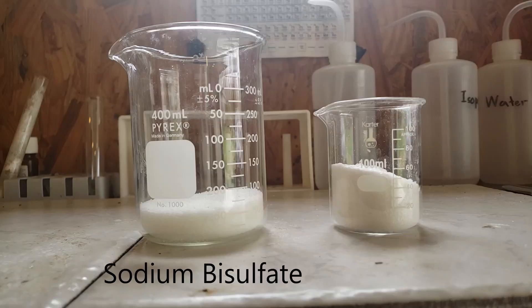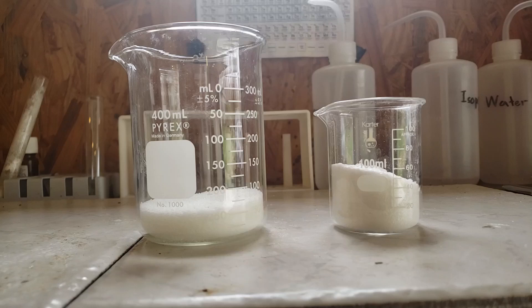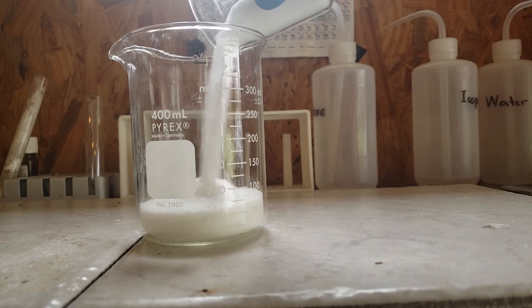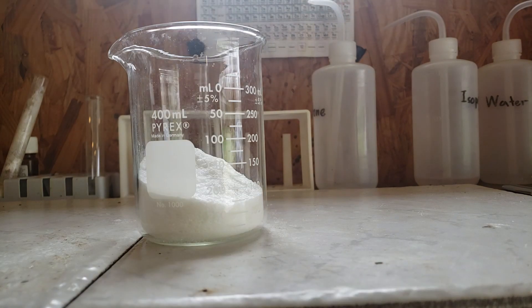First, I measured out about 100 grams of sodium bisulfate, which is an excess. I then measured out about 30 grams of anhydrous sodium acetate. I mixed these two together until I felt that the mixture was mixed enough.